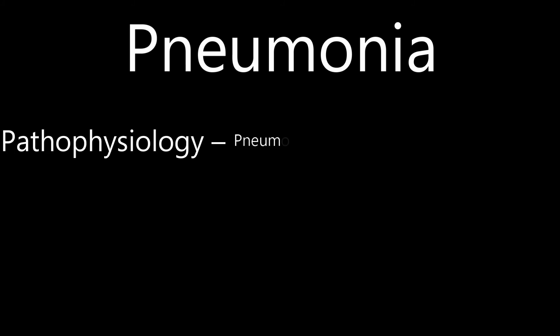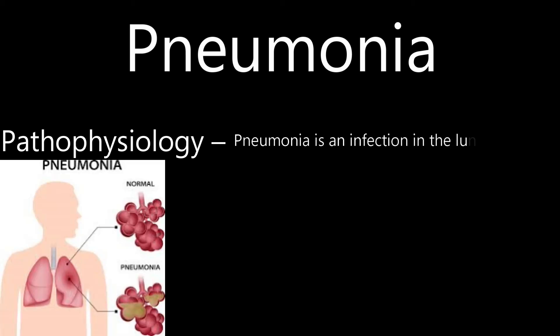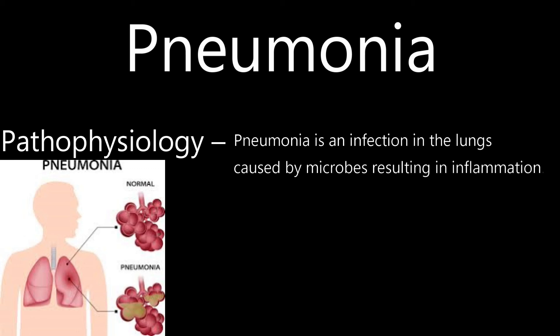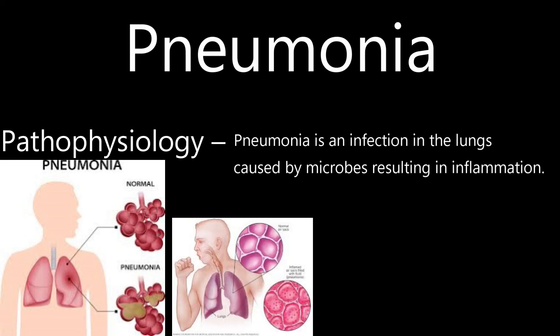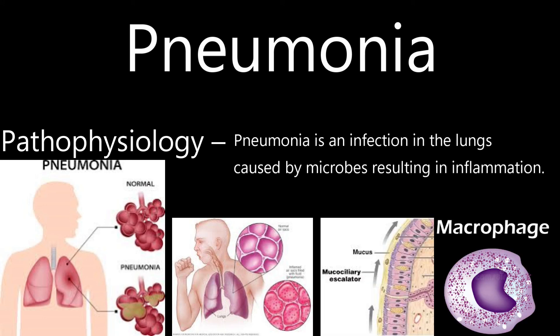The pathophysiology of pneumonia — what causes it? Pneumonia is an infection in the lungs caused by microbes, resulting in inflammation. The inflammation brings water into the lung tissue. The microbes are normally taken care of by the body's natural defenses, such as coughing, the mucociliary escalator, and macrophages. But left inside the lungs, the microbes can colonize in the bronchioles or alveoli, causing pneumonia.